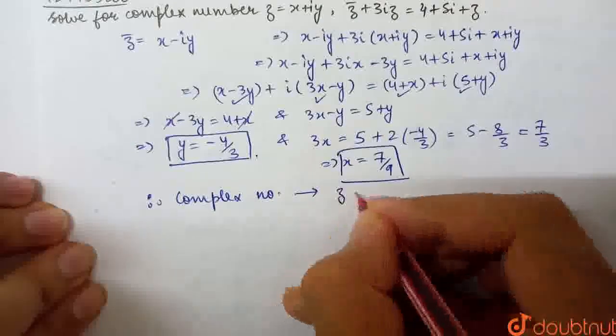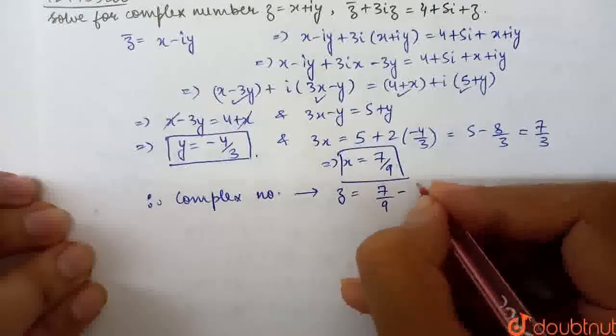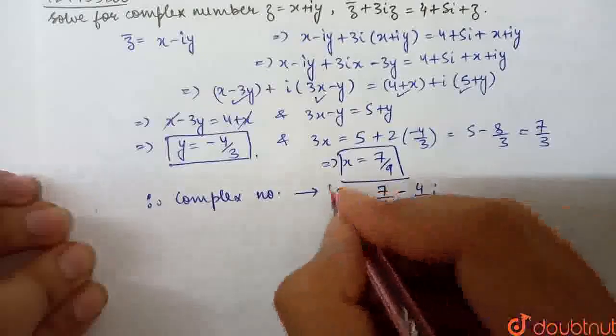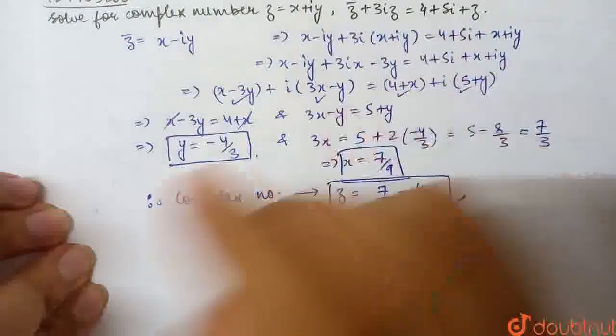Complex number, therefore complex number Z, Z is equal to X plus iota Y, that is 7 by 9 minus 4 by 3 iota. So this complex number Z will satisfy this equation.